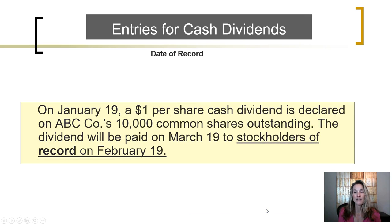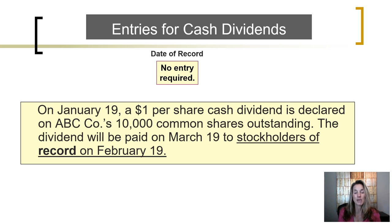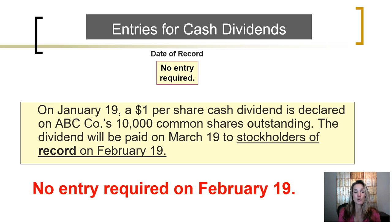On the date of record, the corporation is simply identifying who owns that stock. In the accounting department, there is nothing that needs to be done because no journal entry is required on the date of record, which is February 19th.